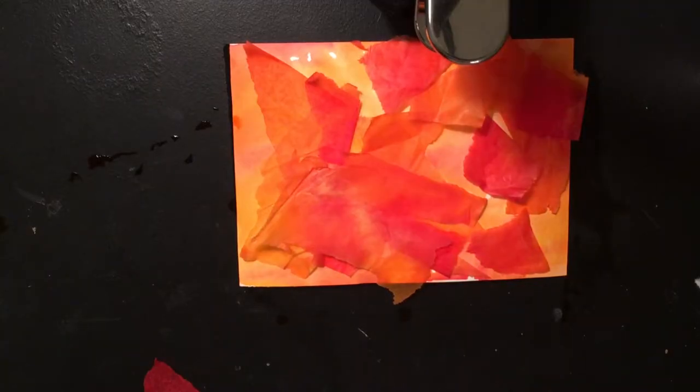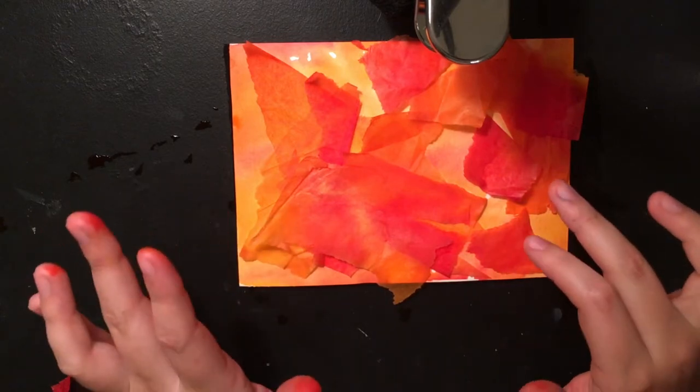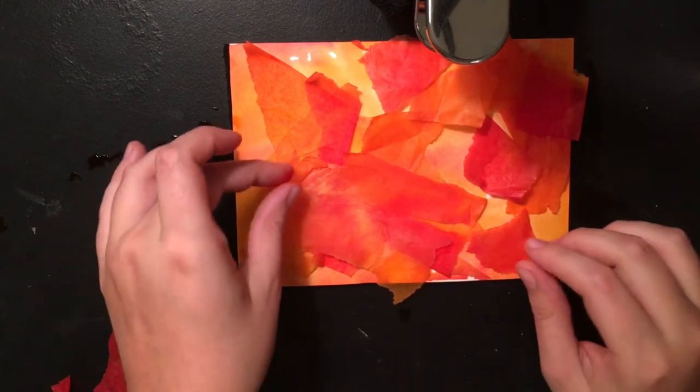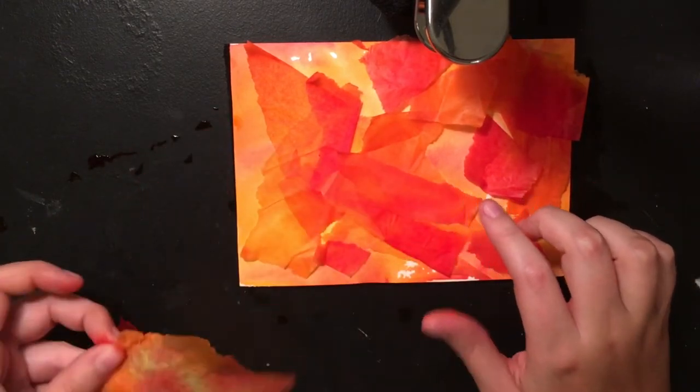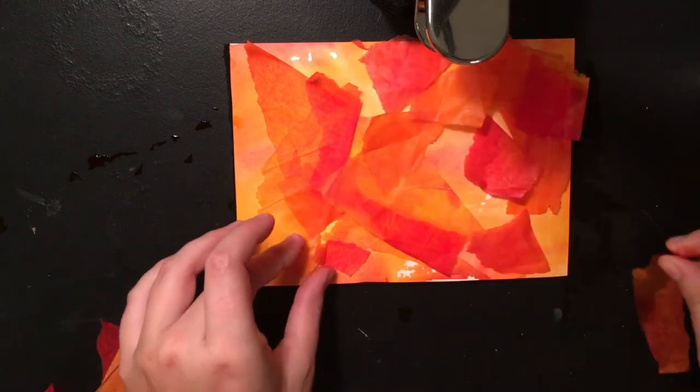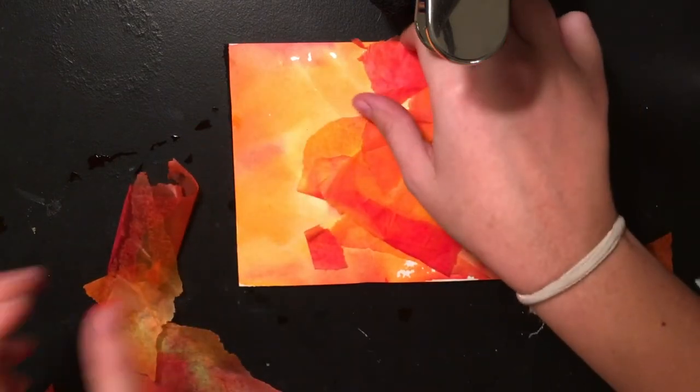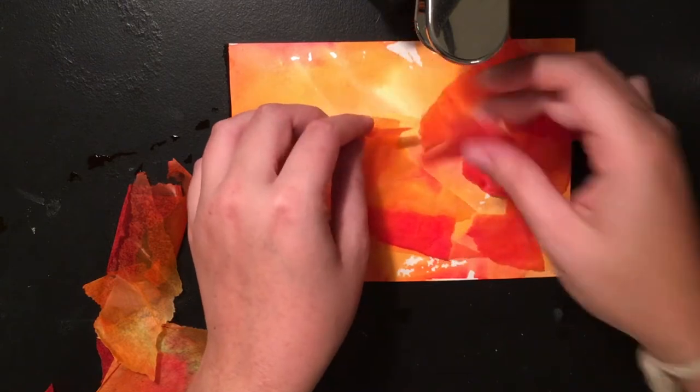So after you've placed all of your tissue paper on top of your watercolor paper, you've saturated it, then you've let it dry, you can start to pick up your tissue paper. They're really easy to take off once you've dried the whole sheet.